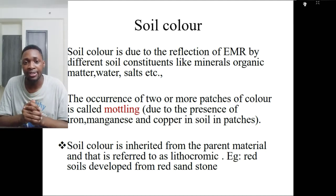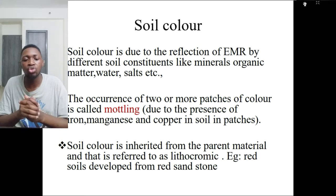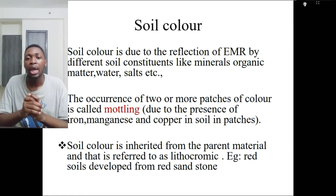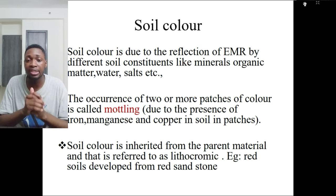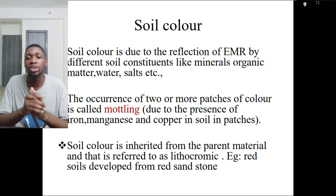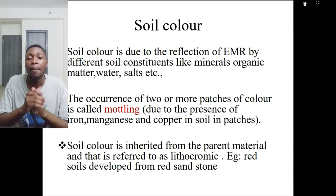The occurrence of two or more patches of color in soil is called mottling. Mottling is whereby a soil has two or more colors at the same time. When a soil has both black and red colors, it is called mottling, and this is due to the presence of copper, manganese, and iron in the soil.